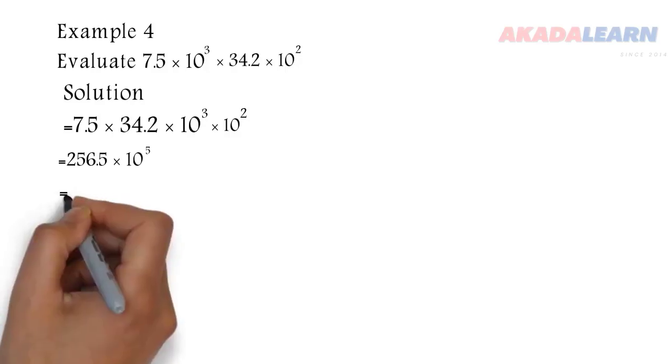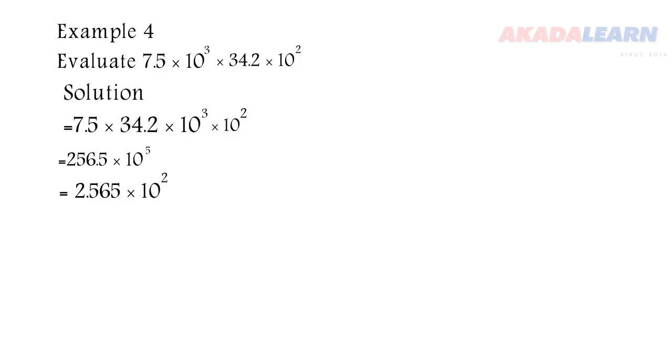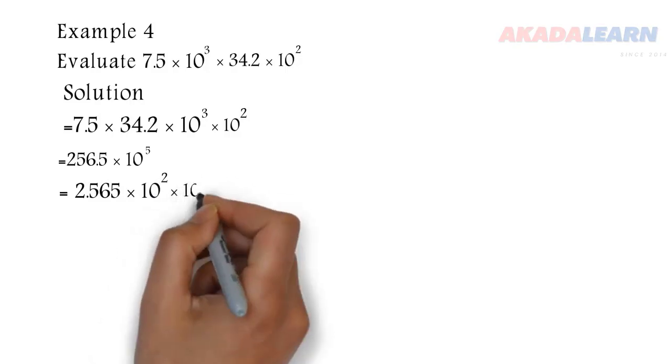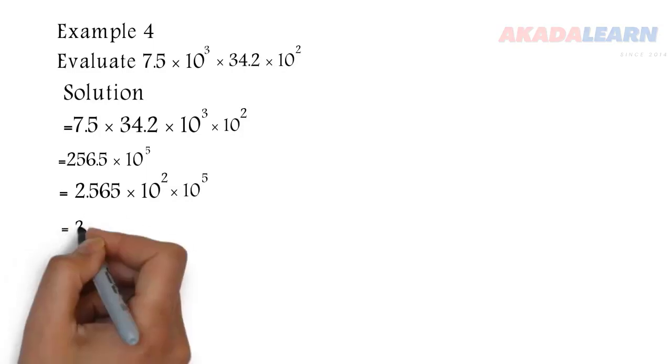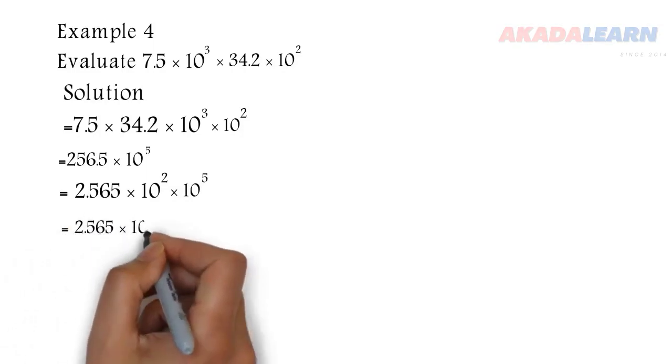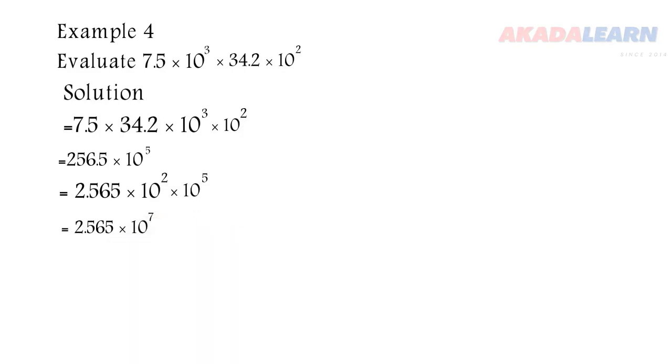We change the first one to standard form. It is 2.565 × 10^2, then times we have our 10^5 there. And when we multiply 10^2 × 10^5, we'll get 10^7. So the number is now in standard form.